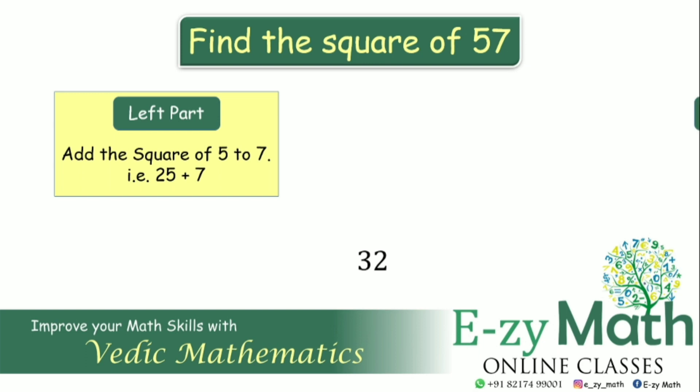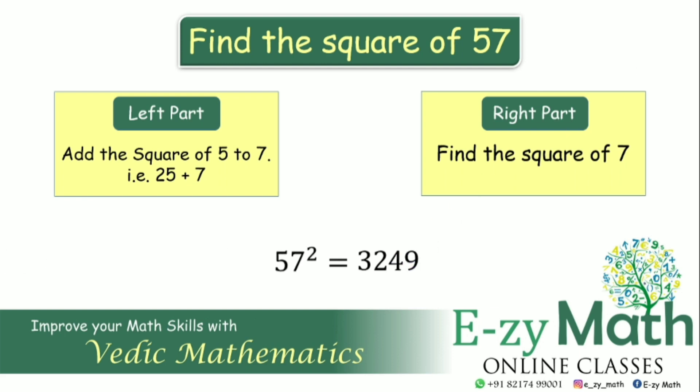And to obtain the right part of the answer, simply square 7. 7 square is 49. Therefore, 57 square is 3,249.